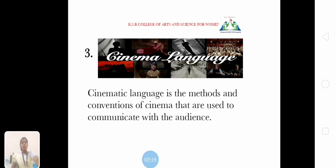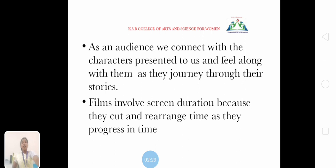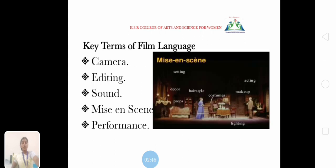I am going to explain about cinema language. Cinematic language is the methods and conventions of cinema that are used to communicate with the audience. As an audience, we connect with the characters presented to us and feel along with them as they journey through the stories. Films involve screen duration because they cut and rearrange time as they progress. The key terms of film language are: camera, editing, sound, mise-en-scène, and performance.